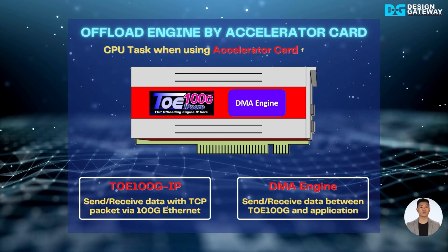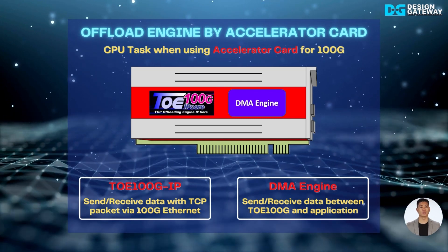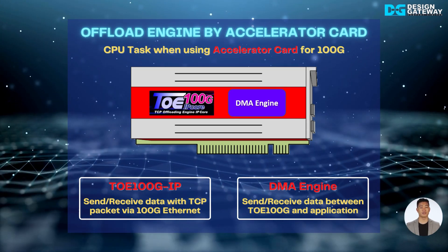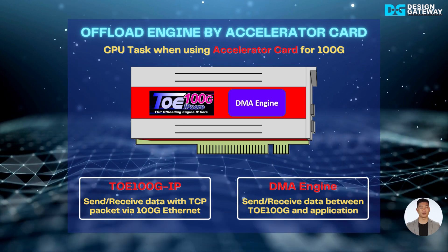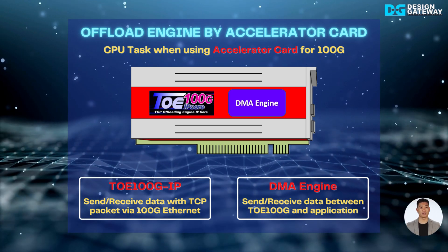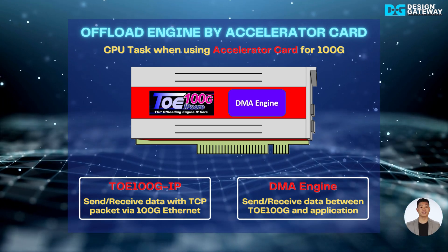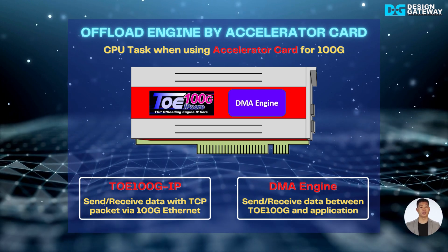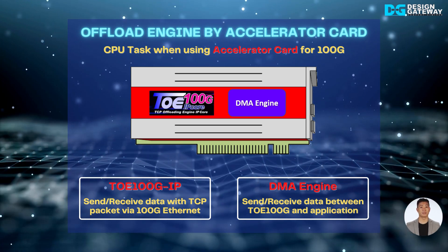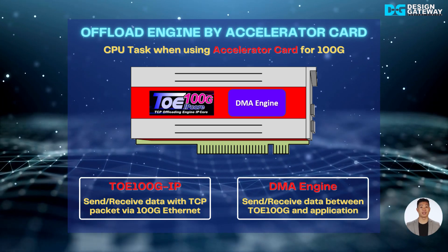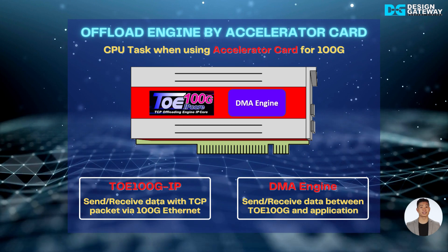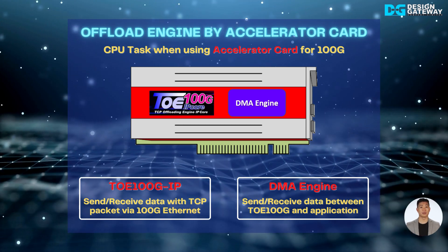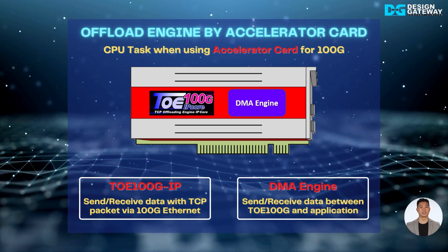There are two key hardware components inside the LVO accelerator card: TOE100G IP and DMA engine. In the sender process, the DMA engine transfers the data from the system memory to TOE100G IP. After that, TOE100G IP builds the Ethernet packet including the application data and transfers it to the target system via 100G Ethernet. In the receiver process, TOE100G IP extracts the application data from the received Ethernet packet. The DMA engine then transfers the application data from TOE100G IP to the system memory, where the application can process it.